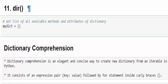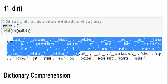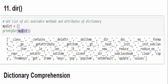The next method is dir(). It stands for directory. If you want to find what are all the available methods and attributes for a particular dictionary variable, you can use the dir() method: print(dir(dictionary_variable)). Running it displays all the available methods and attributes — for example, fromkeys, get, items, pop, setdefault, and so on.